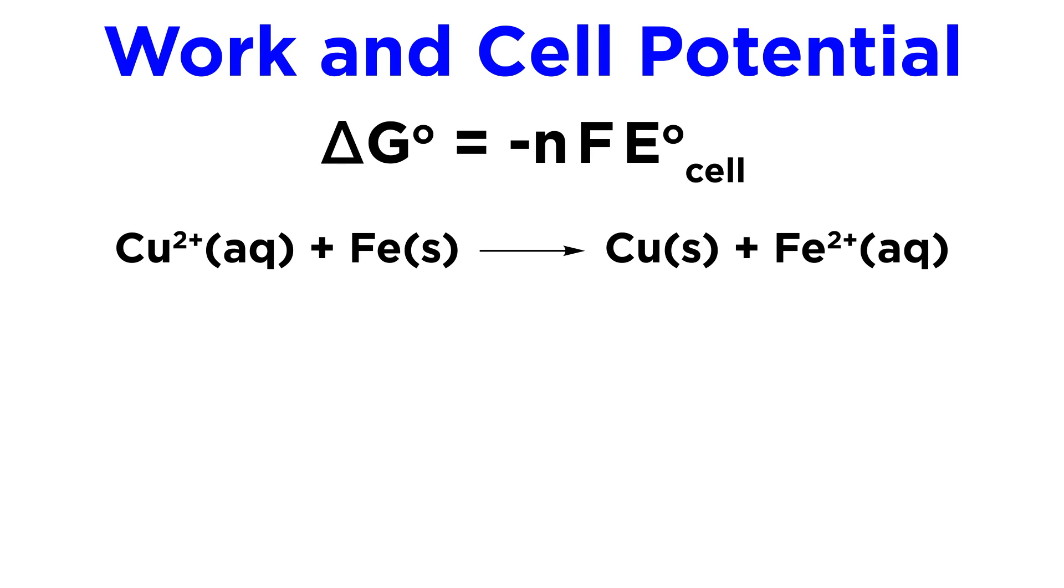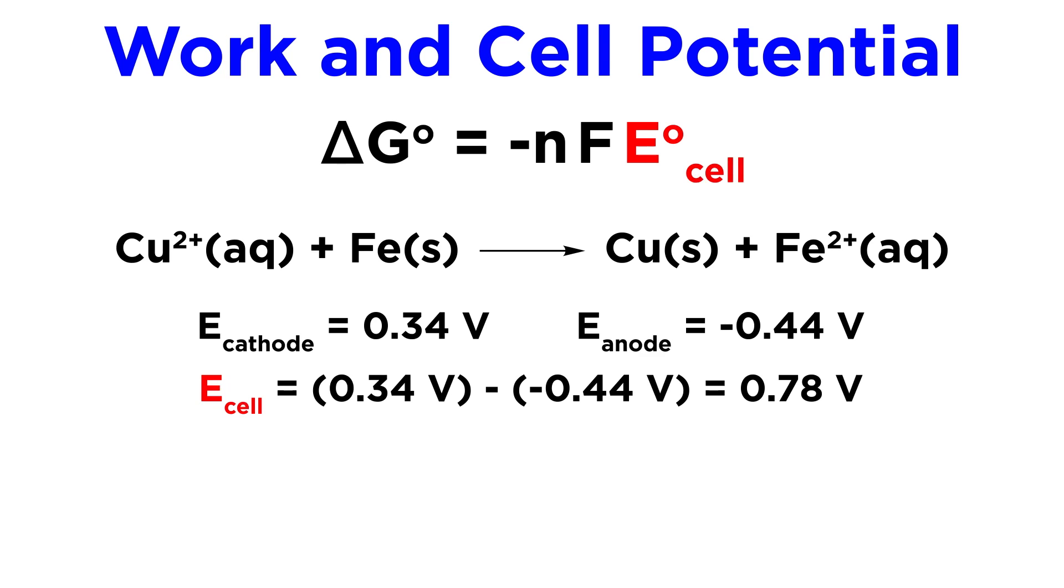For example, given this galvanic cell with copper and iron and their associated reduction potentials, what is the standard change in free energy for this cell? Well, first we calculate the cell potential, which will be 0.78 volts.